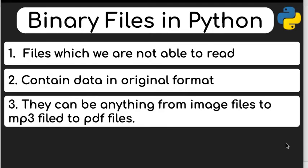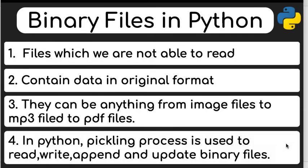We will not be able to read that binary data directly. Binary files are in byte stream format, so data is contained in its original format: integer data in integer form, float data in float form, and so on. You can also store image data and PDF files this way.